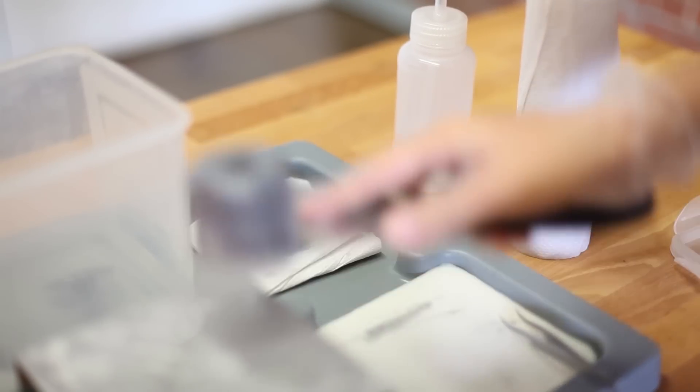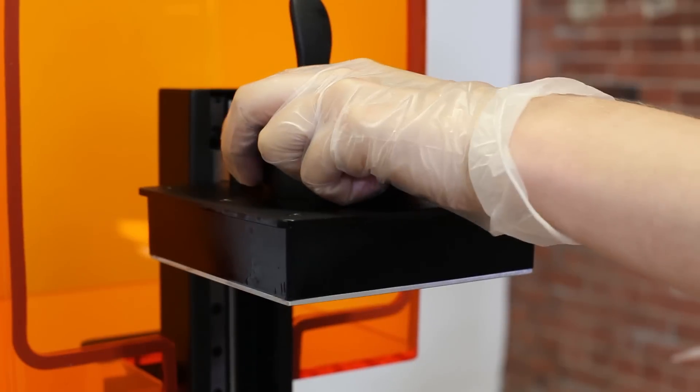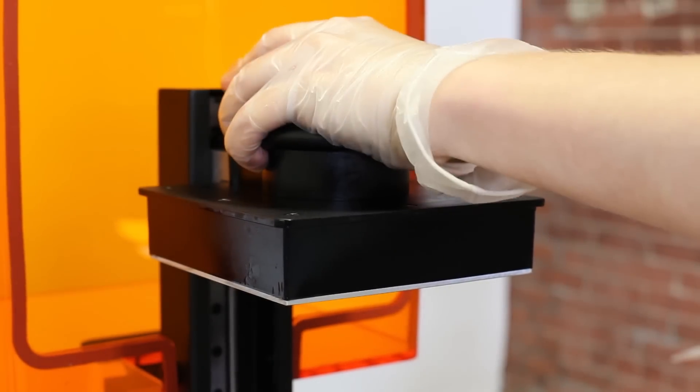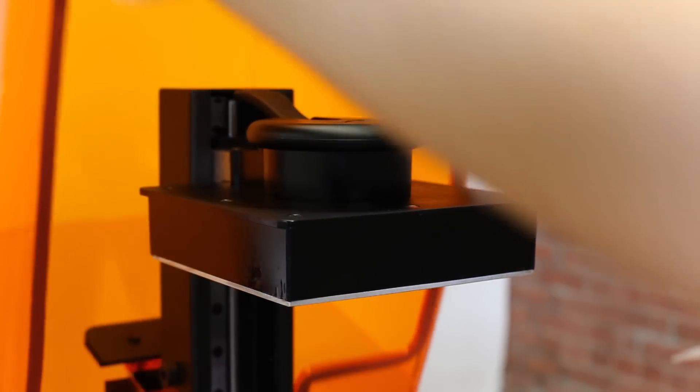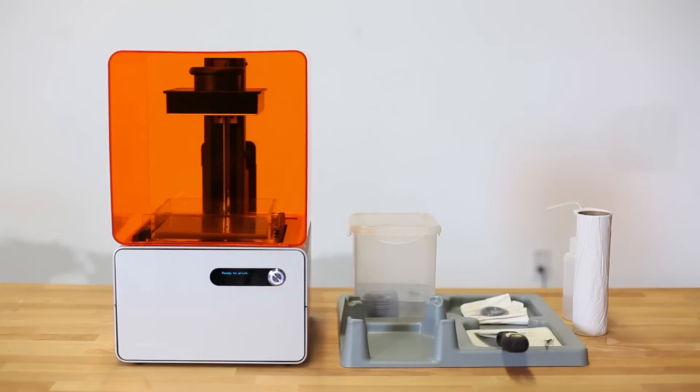Finally, remove any cured material from the build platform the same way you would with a successful print, and do one last check to make sure the silicone layer of the tank is clean and clear. You are now ready for your next print.